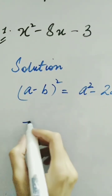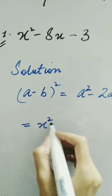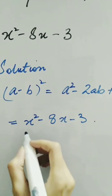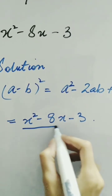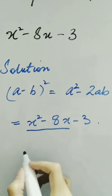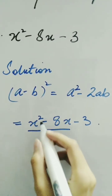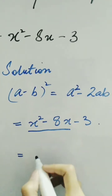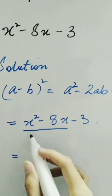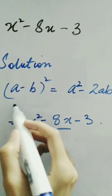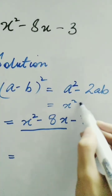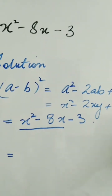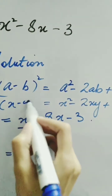Let's start doing the question. In order to convert the expression x squared minus 8x minus 3 into a complete square, we will use these terms and convert them into a formula. As we know, x squared minus 2xy plus y squared is the expansion for the x minus y whole square expression.